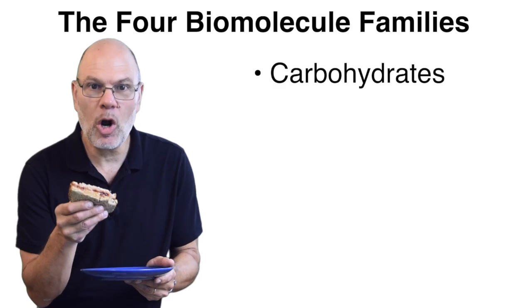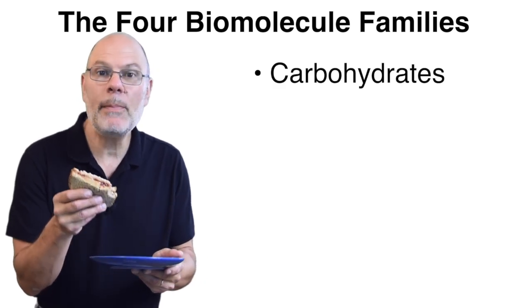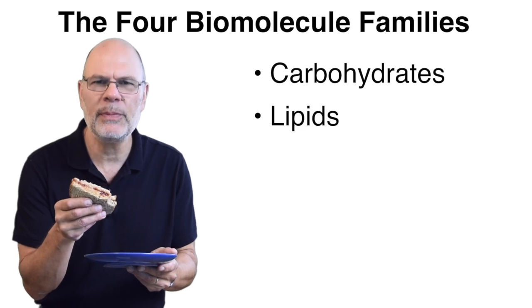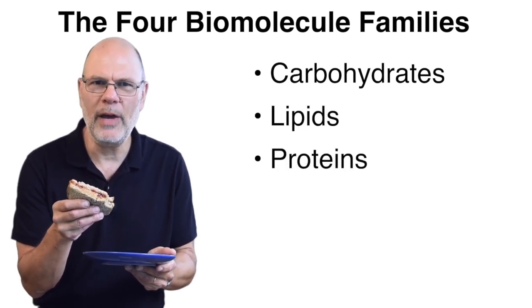The bread and jelly are carbohydrates, family number one. The peanut butter has fat, which is a representative of family number two, the lipids. It also has lots of protein, which is our third family.